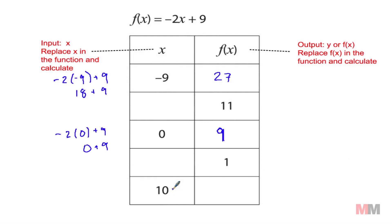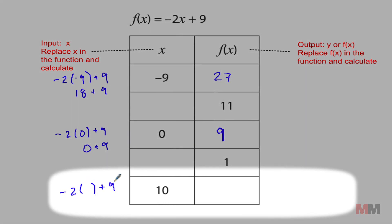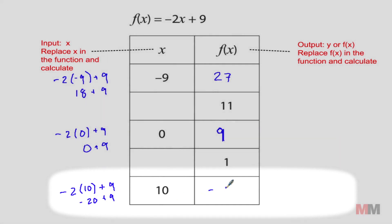And then the last one, plug in a 10. Sometimes it's easier to, I always tell my students to replace the x with parentheses first and then put in your input, your 10. So negative 2 times 10 is negative 20 plus 9, which is negative 11.